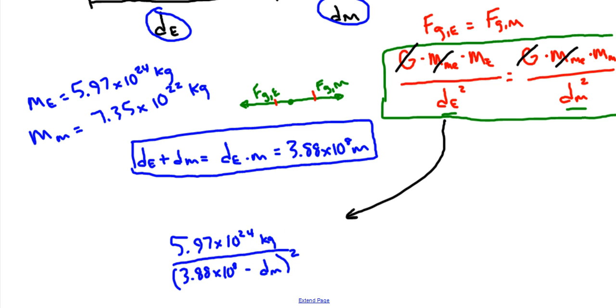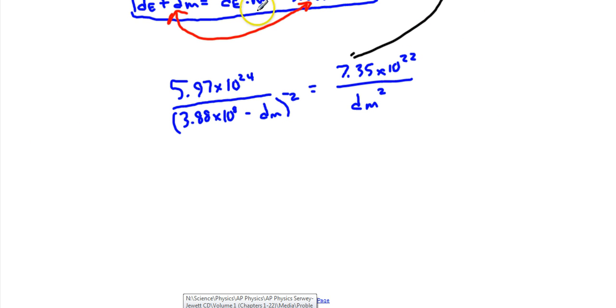That just comes from here and here, combining those two pieces. We're going to set that equal to 7.35 times 10 to the 22nd divided by distance to the Moon squared.